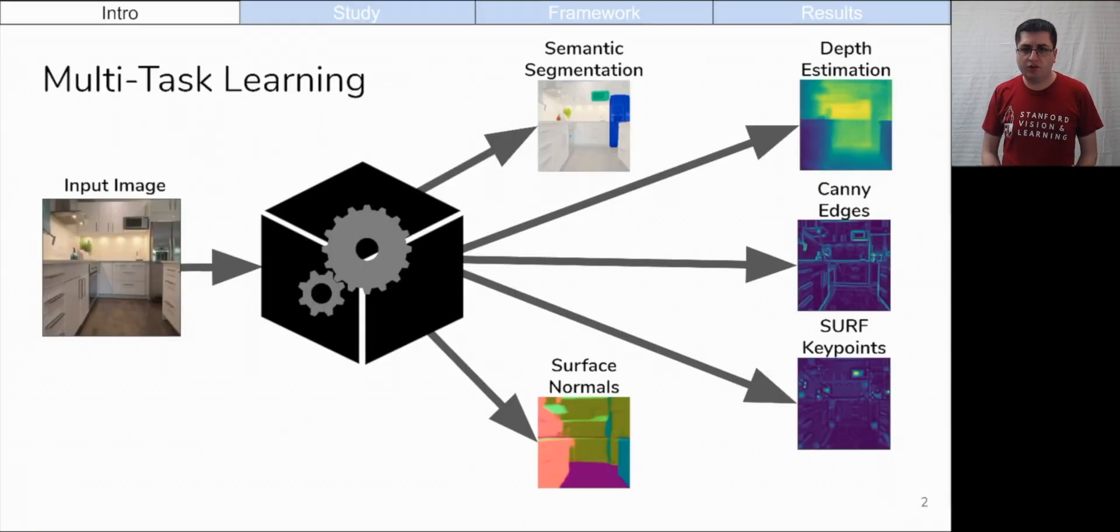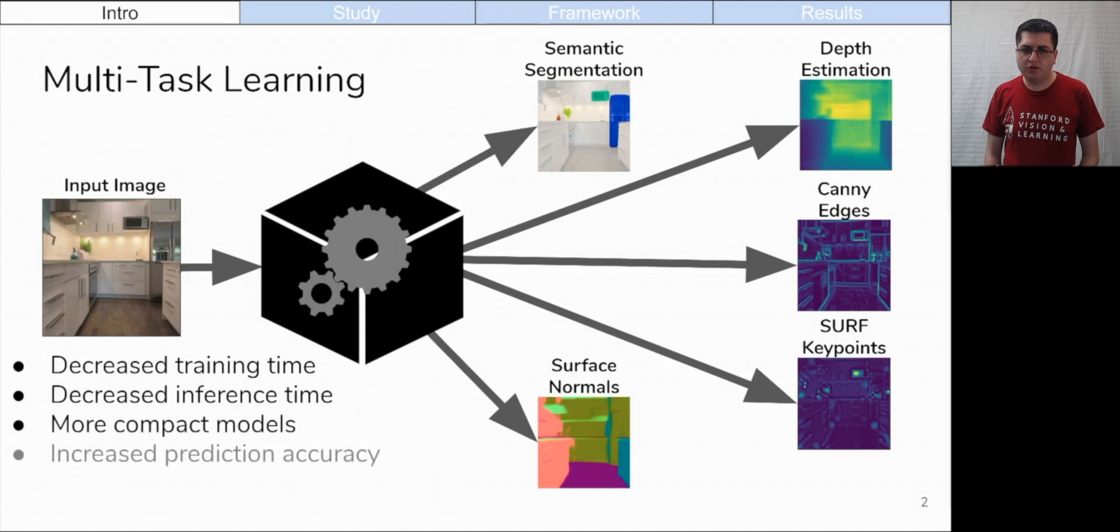In multitask learning, multiple predictions need to be made for a given input. The goal of multitask learning is usually to achieve one or more of the following benefits: decreased training time, decreased inference time, more compact models, increased prediction accuracy for one or more tasks, increased sample efficiency, or better learned representations.